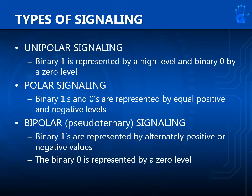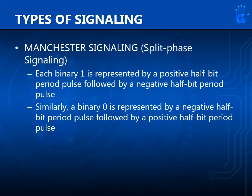Types of signaling: In unipolar signaling, binary 1 is represented by a high level and binary 0 by a zero level. In polar signaling, binary 1s and 0s are represented by equal positive and negative levels. In bipolar signaling, binary 1s are represented by alternately positive or negative values, and binary 0 is represented by a zero level. In Manchester signaling, each binary 1 is represented by a positive half-bit period pulse followed by a negative half-bit period pulse, and binary 0 is the reverse.